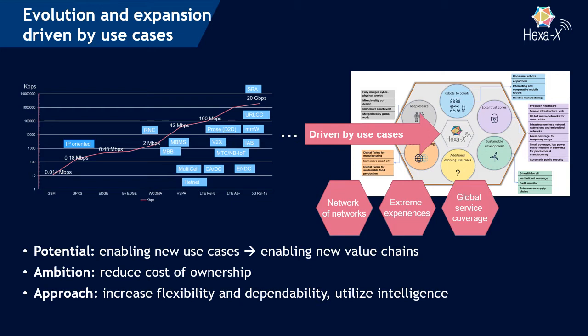The potential of these new use cases is that they enable new value chains, allowing different market players to come up with new products and services. At the same time, when enabling such new value chains, we need to make sure that the cost of ownership is reduced accordingly. To achieve this, we have approaches to increase flexibility and dependability, and to utilize intelligence wherever possible — a recurring theme across HEXA-X.